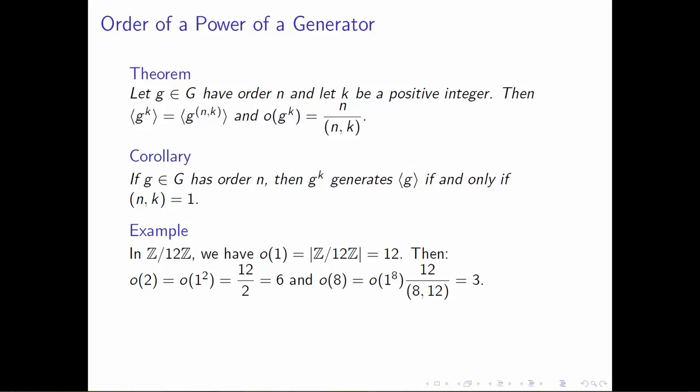Similarly, for an example where the integer doesn't happen to divide the order of the group: if we're looking at something like 8, we'd view 8 as 1 raised to the 8th power inside Z mod 12Z. To compute the order of 8, we take 12—the order of 1—and divide it by the greatest common divisor of 8 and 12, and the order is 3.